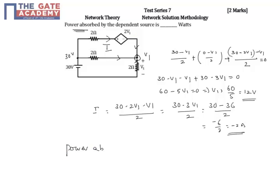So power absorbed is nothing but the voltage, that is 2v1, into the current flowing through that, I. So 2v1 is 2 into 12, current is you have to take minus 3 because he is saying absorb.